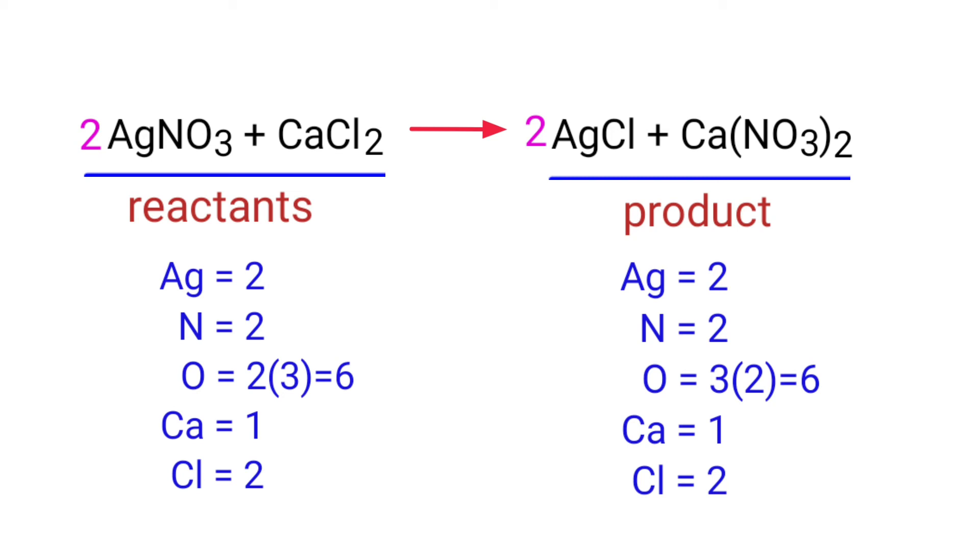The equation is now balanced. There are two silver atoms, two nitrogen atoms, six oxygen atoms, one calcium atom, and two chlorine atoms on both sides.